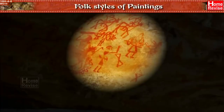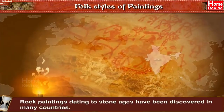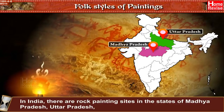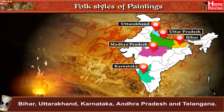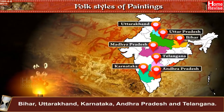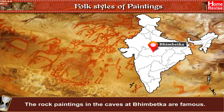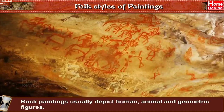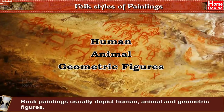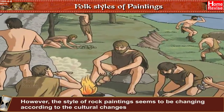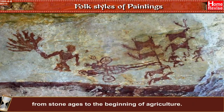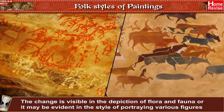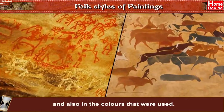Rock paintings dating to the Stone Age have been discovered in many countries. In India, there are rock painting sites in the states of Madhya Pradesh, Uttar Pradesh, Bihar, Uttarakhand, Karnataka, Andhra Pradesh, and Telangana. The rock paintings in the caves at Bhimbetka are famous; Bhimbetka is in fact a World Heritage Site. Rock paintings usually depict human, animal, and geometric figures, with the style appearing to change according to cultural changes from the Stone Age to the beginning of agriculture.